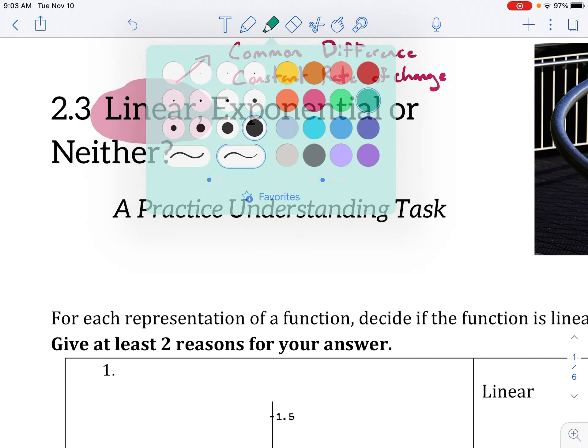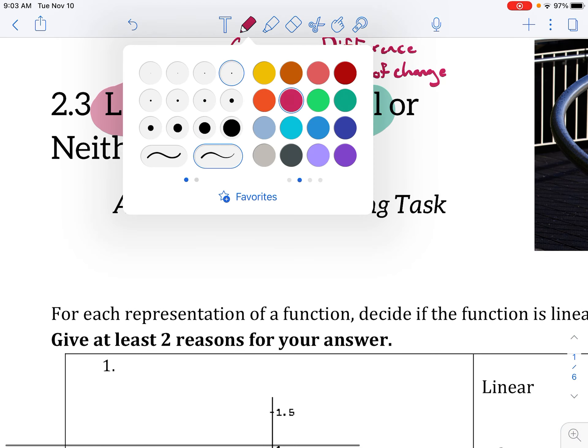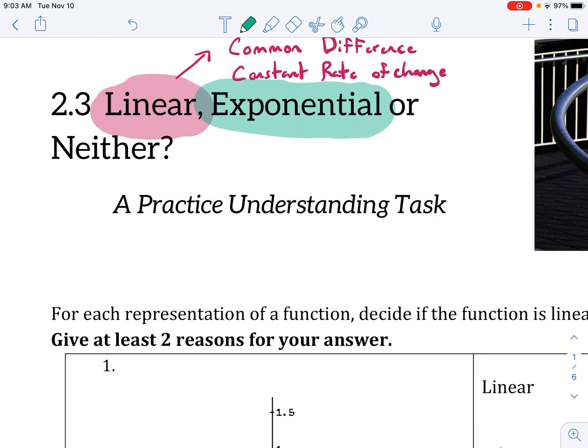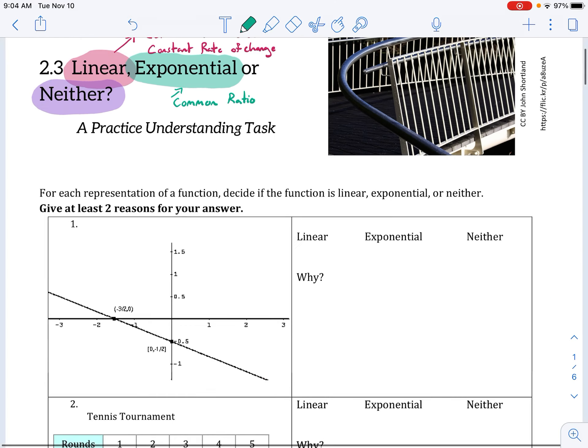The other option is that it's exponential, and for exponential it would have a common ratio. And if it doesn't have either—if it doesn't have a common difference or a common ratio—then it would simply be neither. So let's go through and look at a couple of these.